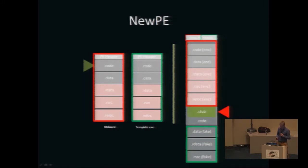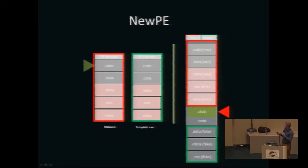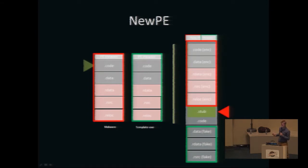So we developed a new technique. This time the input is not only a malware but also a template executable — a legitimate file like a Windows file or popular third-party program. This technique takes elements of both files to construct a completely new PE file. We construct a new PE header from both PE headers, put all the malware sections encrypted into our code section along with our stub, and append some legitimate sections from the template executable so the final file looks legitimate.